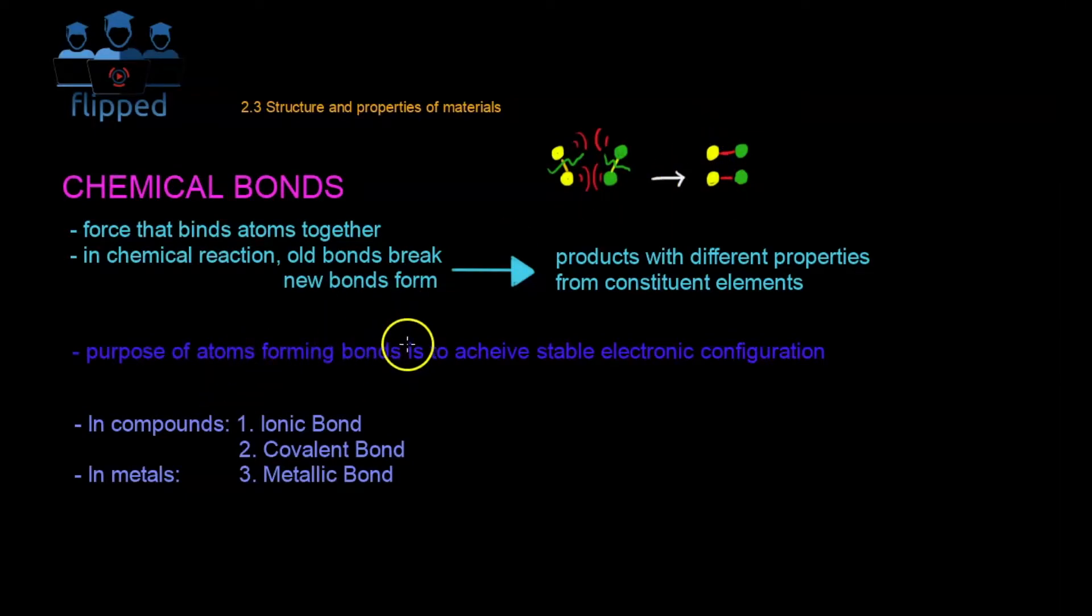And this will result in the products being different from the constituent elements and having different properties. They have different properties due to different bonds, as in the different nature of bonds give them different properties. And the purpose of atoms forming bonds is to achieve stable electronic configuration. We will talk about this more in the later part. Basically, this is a summary. In compounds, they can have two forms of bonds: one is an ionic bond, one is a covalent bond. In metals, there only exists metallic bond. We shall talk about this in subsequent videos.